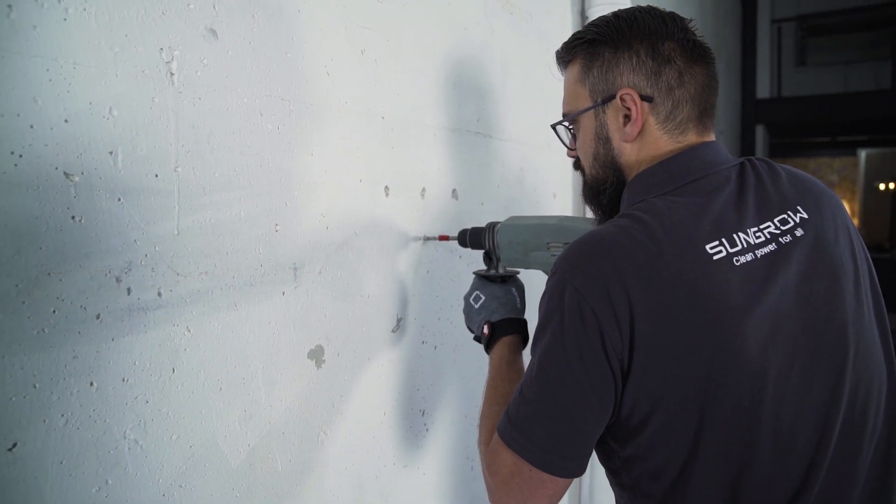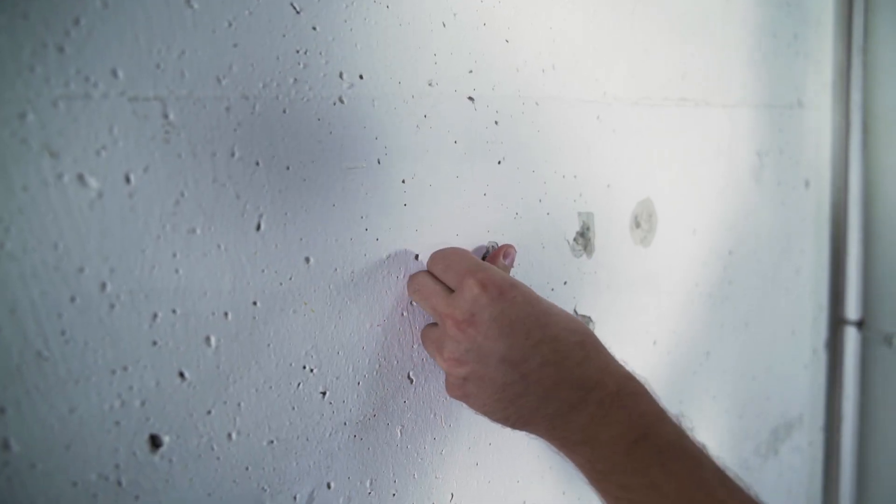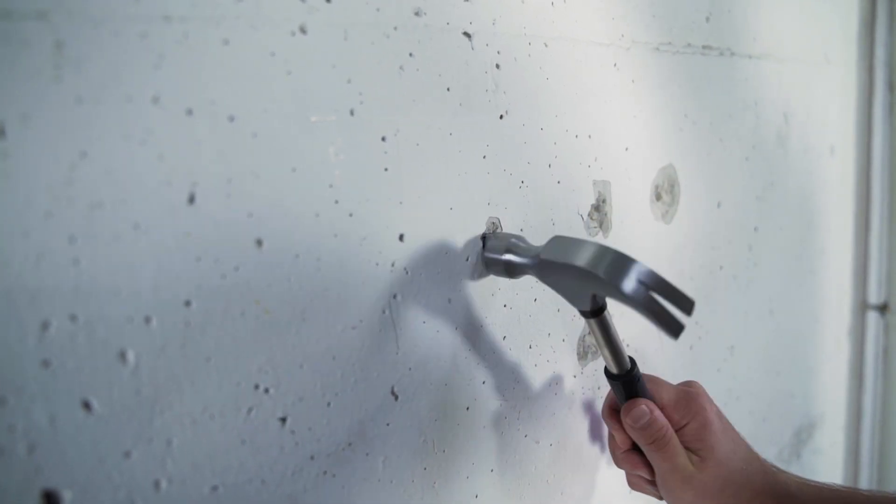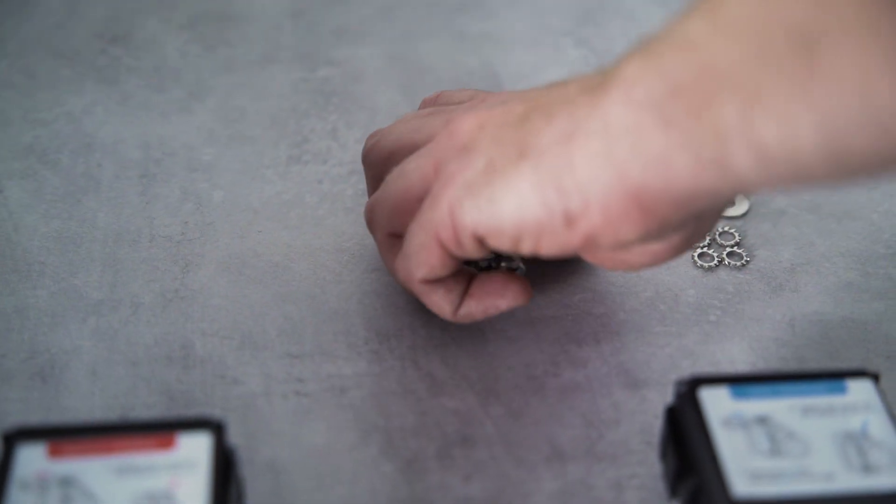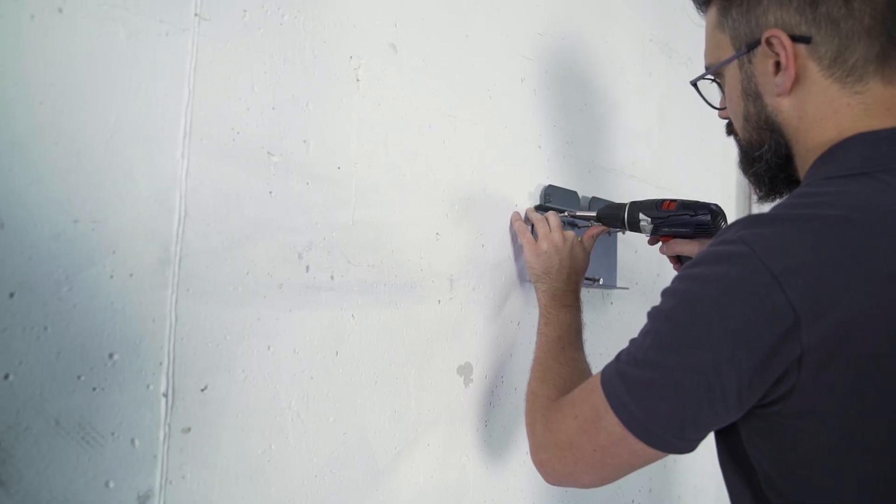The dowels for mounting the inverter on the wall are included in the delivery. You will also need a cordless screwdriver for attaching the mounting plate. The required screws are part of the delivery.